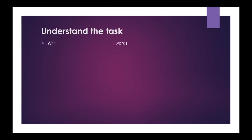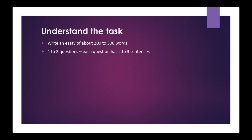Let us understand the task first. Write an essay of about 200 to 300 words. As per Pearson, the word limit should be between 200 to 300, but the recommended word limit is 232 to 260 words. You may get 1 or sometimes 2 essays, and each question has 2 to 3 sentences. You have 20 minutes to write the essay. Make a plan to think about ideas, write the essay, and then allocate some time to review it. Spend at least 3 to 5 minutes to review so that you can check spellings, grammar, and correct sentences if required.